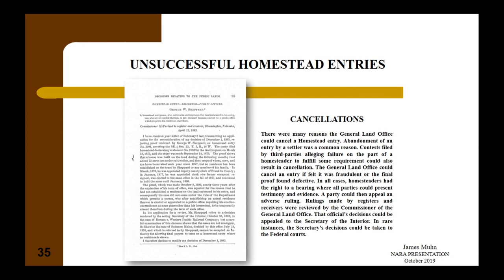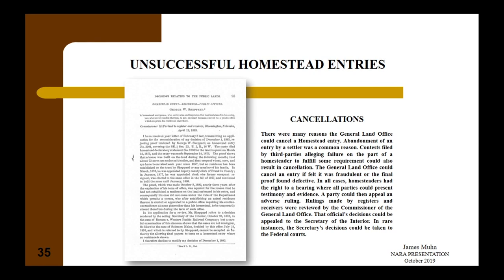The second type was cancellations. The General Land Office could cancel a homestead entry for many reasons: abandonment by a settler, contests filed by third parties alleging failure to fulfill requirements, or if the entry was found fraudulent or the final proof defective. In all cases, homesteaders had the right to a hearing where all parties could present testimony and evidence. Adverse rulings by registers and receivers were reviewed by the Commissioner of the General Land Office, whose decisions could be appealed to the Secretary of the Interior, and in rare instances, to the federal courts.